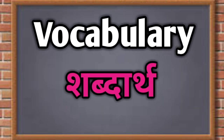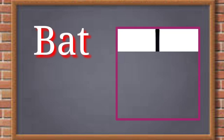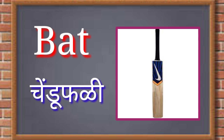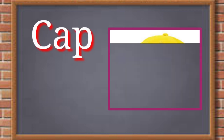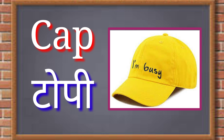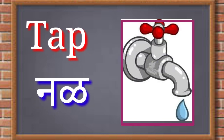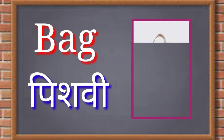Vocabulary. Shabdanchi basket paha. Bat — manjiz (chindu pholi), Cat — manzar, Cap — topi, Tap — nul, Bag — pishwi.